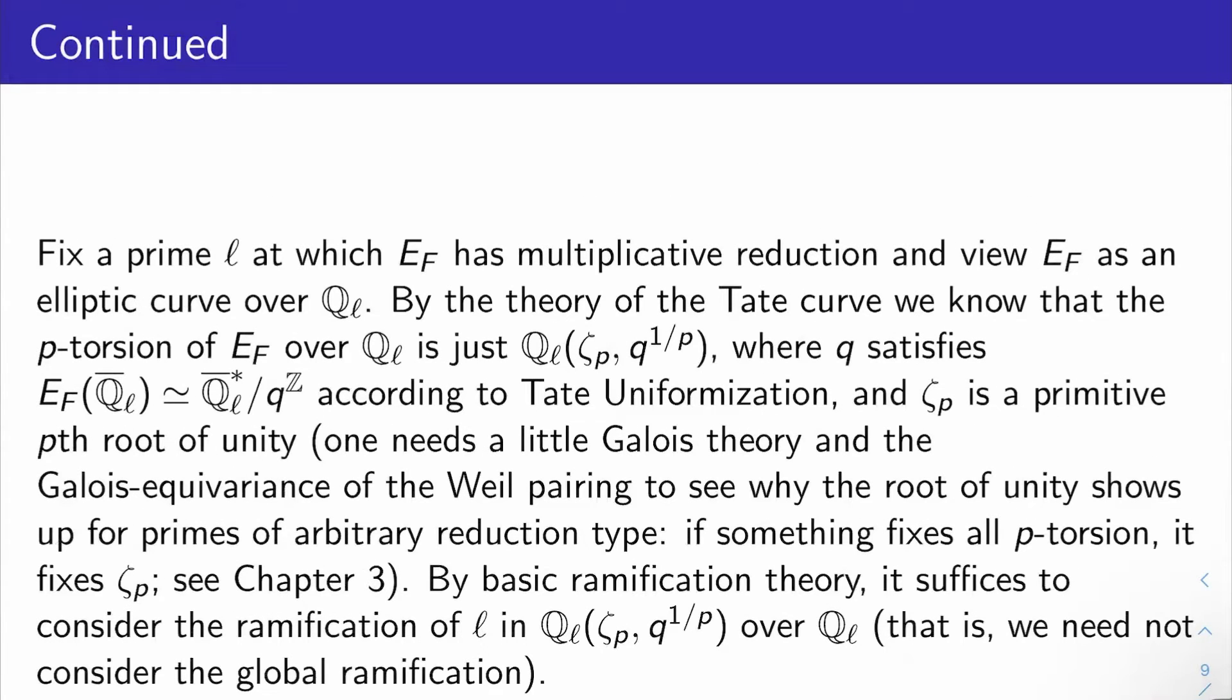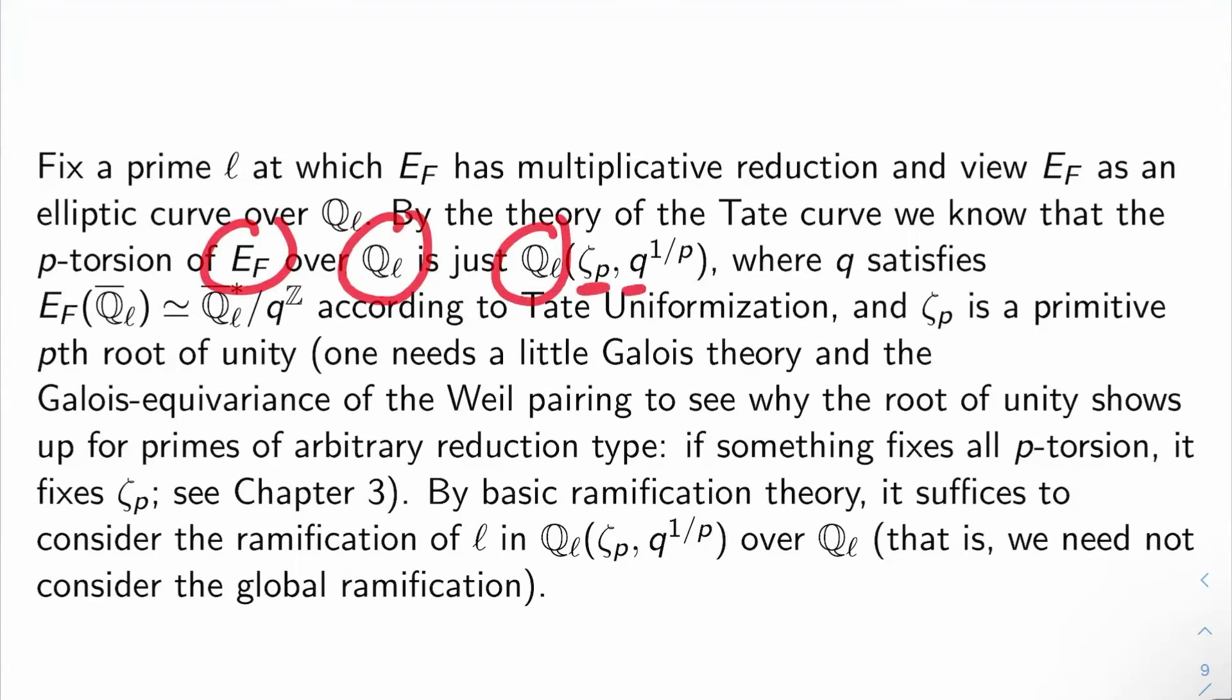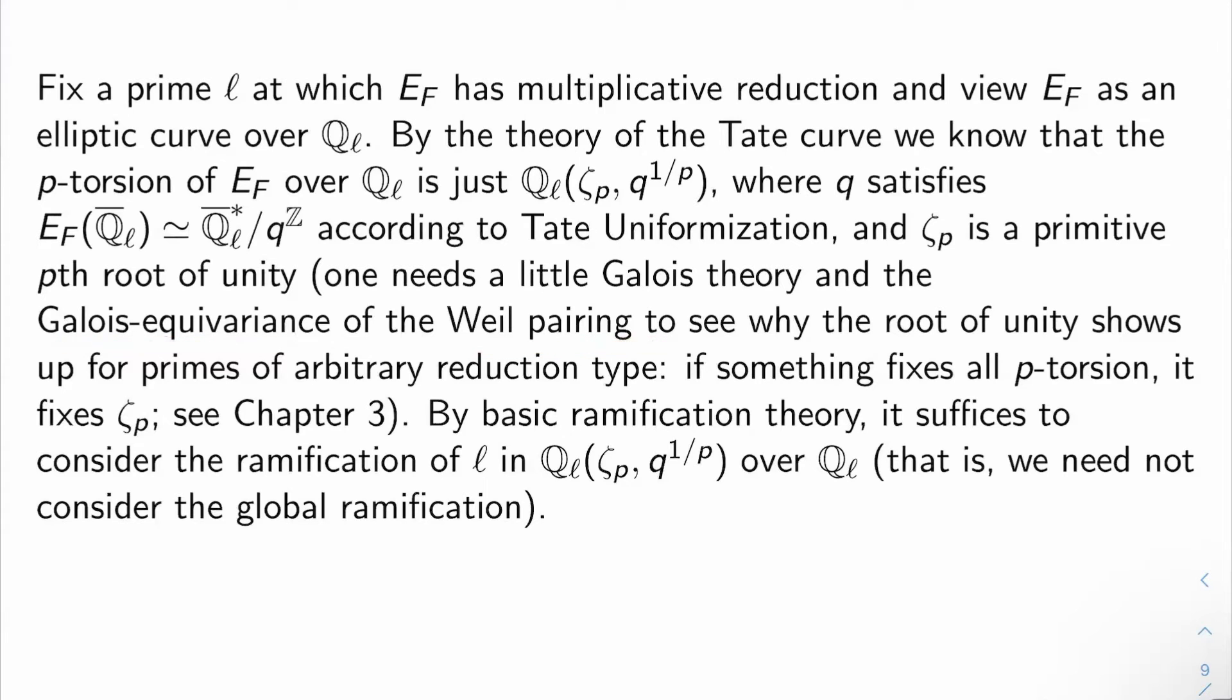So I want to show K_p/Q is unramified outside 2p. So let's fix a prime l at which E_F has multiplicative reduction, and we'll view E_F as an elliptic curve over the l-adic numbers. By the theory of the Tate curve, so Tate uniformization from the previous video, we know that the p-torsion of E_F over Q_l is just Q_l adjoined ζ_p and q^(1/p), where q satisfies that Q̄_l points of E_F are isomorphic to Q̄_l^*/q^Z, according to Tate uniformization from the end of last video, and ζ_p is just a primitive pth root of unity. You need a little bit of Galois theory and the Galois equivariance of the so-called Weil pairing to see why this root of unity shows up for primes of arbitrary reduction type, but we'll talk about this in chapter three later. Basically, if something fixes all p-torsion, it will automatically fix ζ_p, so that's what's going on here.